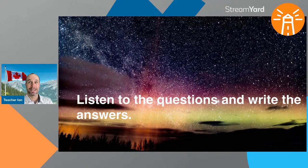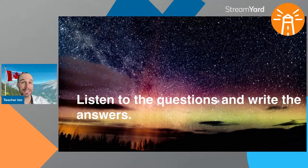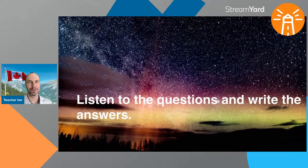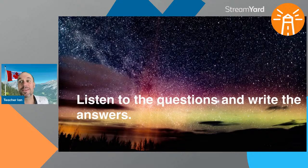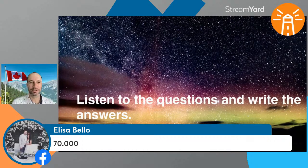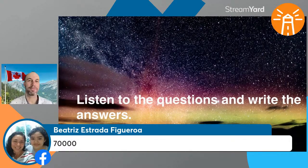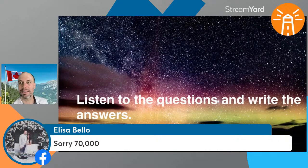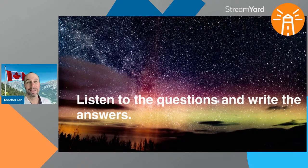Number six: how many plant and animal species are there in Canada? Usually we use a comma to separate thousands rather than a period, as is common in some places. The answer is over 70,000 — so 70,000 is a great answer. Over 70,000 plants and animal species in Canada, which is a lot.